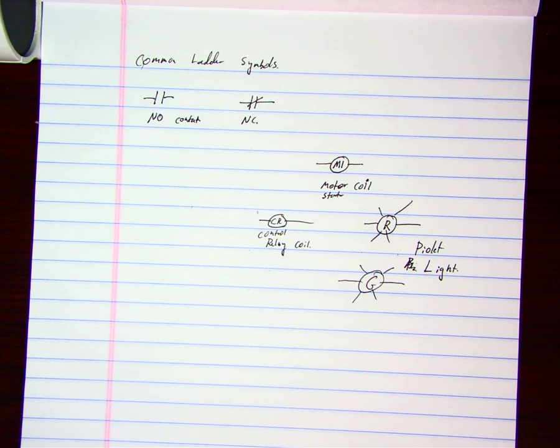You've got your normally open contacts, your control relays, and your motor coil starter relay, and those are usually what's going to control your normally open, your normally closed contacts, either your coil or your control relays or your timing relays, and then you've got your pilot lights so we know they're on.